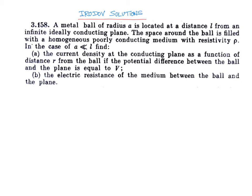In problem 3.158, a metal ball of radius a is located at a distance l from an infinite ideally conducting plane. The space around the ball is filled with a homogeneously poor conducting medium of resistivity rho. The condition is a much much smaller than l, meaning the ball is almost a point charge — very small compared to the dimensions of the plate.